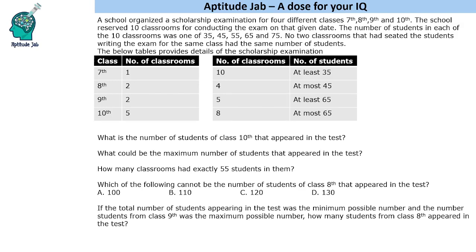The number of students in each of the 10 classrooms was one out of these five numbers: 35, 45, 55, 65, and 75. No two classrooms that had seated the students writing the exam for the same class had the same number of students. So if there are two classrooms allotted to class 8, these two will have different numbers. Similarly for 9th, these two will have different numbers.